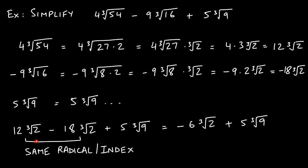Now combining: 4 cube root of 54 simplified to 12 cube root of 2, and negative 9 cube root of 16 simplified to negative 18 cube root of 2. Both have index 3 and radicand 2, so they are like terms. 12 minus 18 gives negative 6, so we get negative 6 cube root of 2. The 5 cube root of 9 just comes along — we never touch the radical, only the coefficients of like terms.